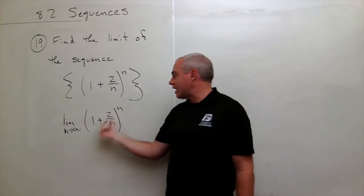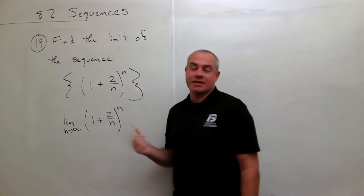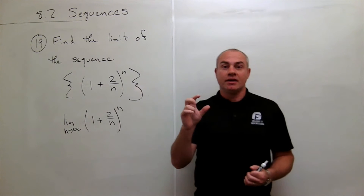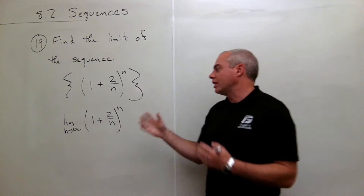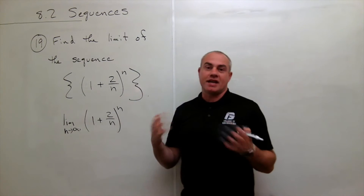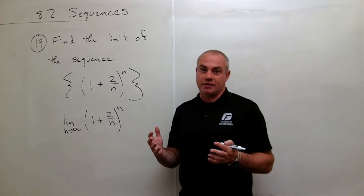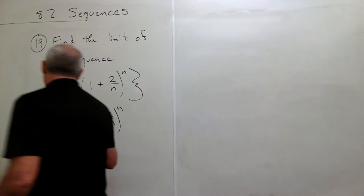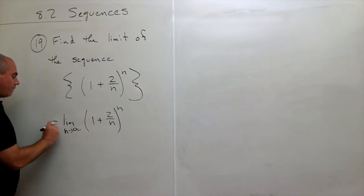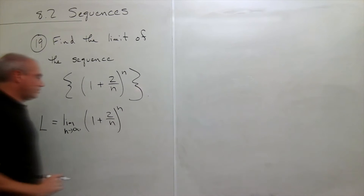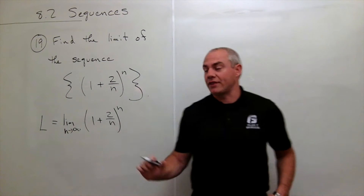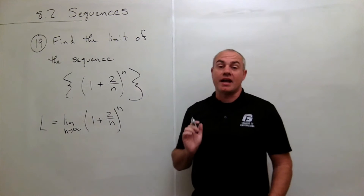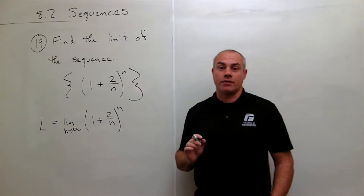I notice that I have an n up in the exponent, and that should be a key that tells me I really want to take a natural log of this. I don't know what this limit is, so I'm just going to call it L. So let's call that limit L and take the natural log of both sides of the equation.